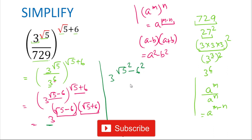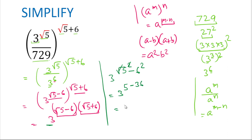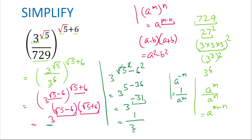The square root and the square cancel, giving us 5. And 6 squared is 36. So the exponent becomes 5 minus 36, which equals negative 31. We now have 3 to the power of negative 31. Using the rule a to the power of negative m equals 1 over a^m, the final answer is 1 divided by 3 to the power of 31.